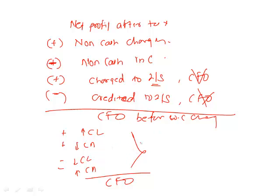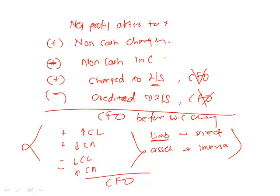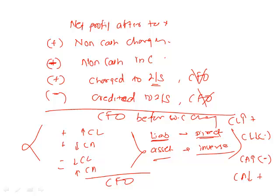There is an easy trick to remember this, and it works at multiple places in the syllabus. When it is a liability, the relationship is direct; when it is an asset, the relationship is inverse. So: when current liability increases, add; when current liability decreases, minus; when current asset increases, minus; and when current asset decreases, add.